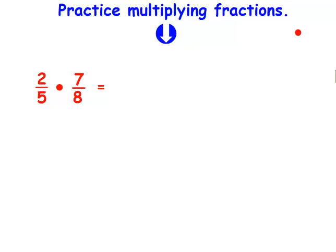So you have 2 fifths times 7 eighths. You just multiply across. 2 times 7 is 14. 5 times 8 is 40. Before I'm done, I need to try and simplify my answer. The numerator goes first. The denominator goes second.